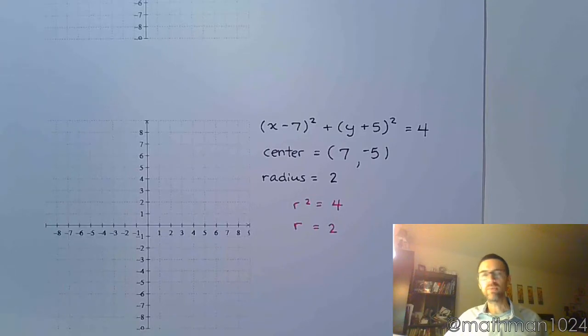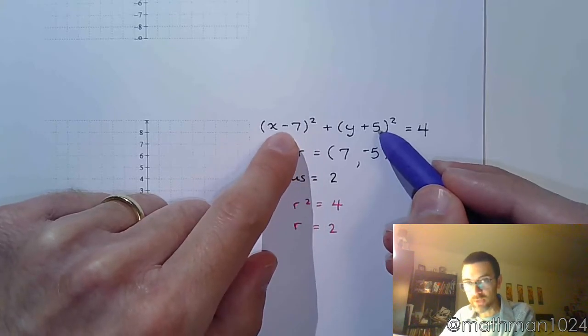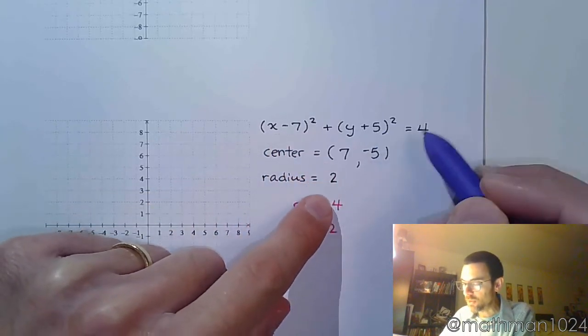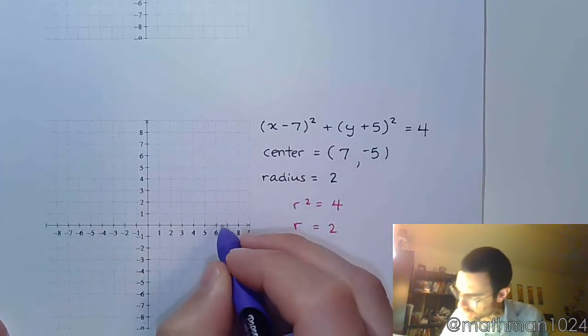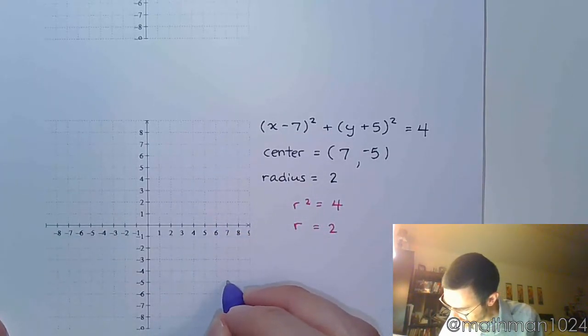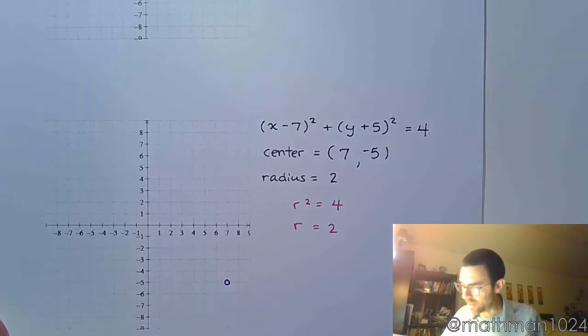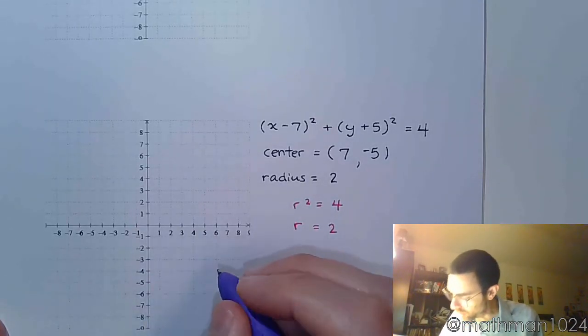And now we graph this. So make sure you understand how we get the center. Doing the opposite of the signs that we see here. And the radius is going to be the square root of that number. All right, so we've got 7, negative 5. Put an open circle there.